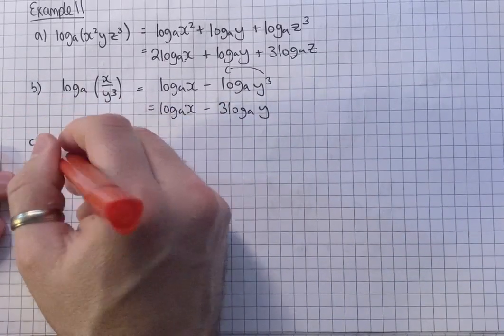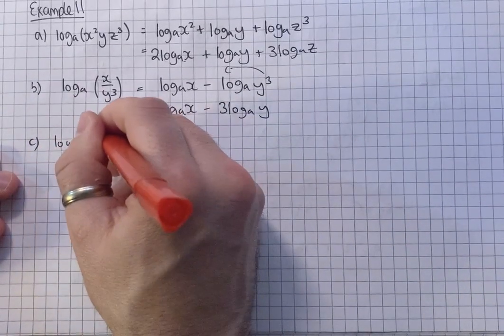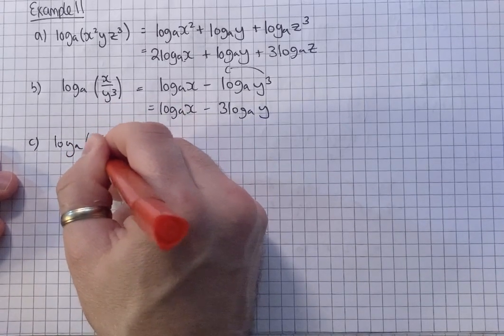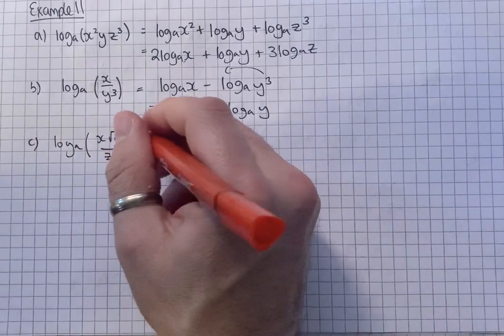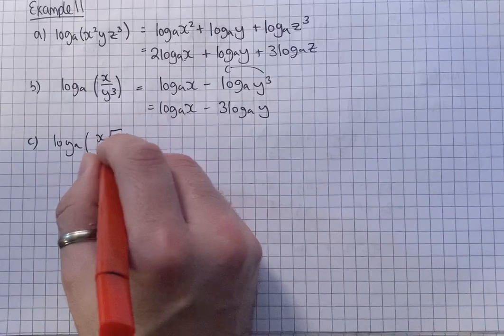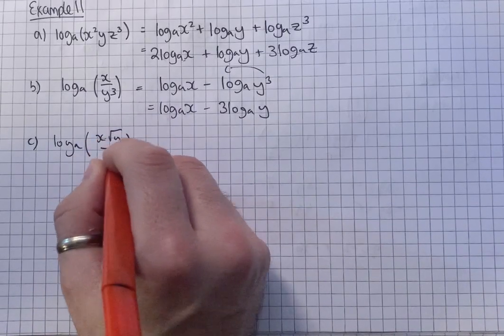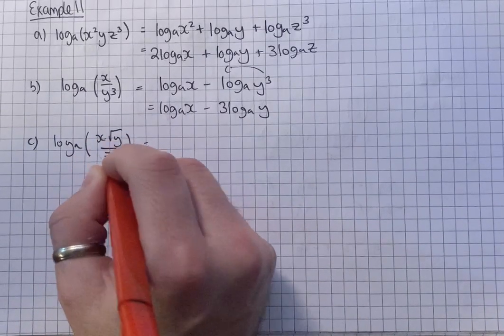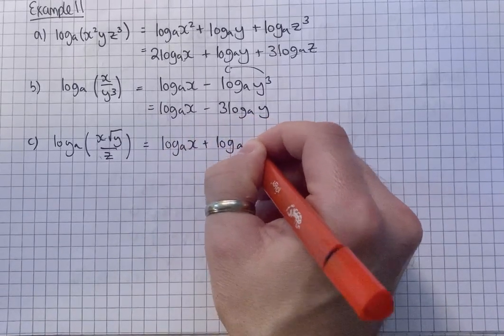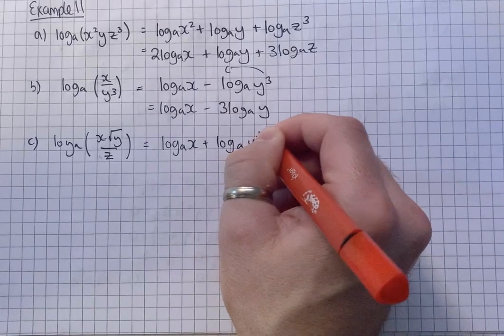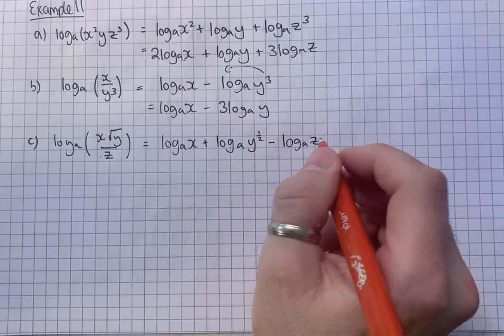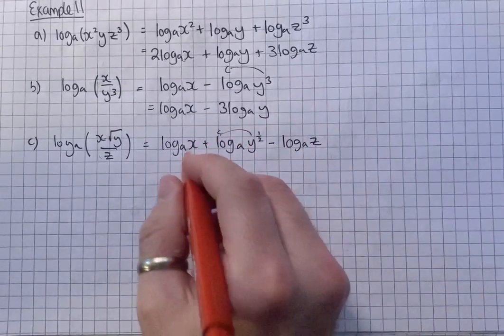Let's see C. Okay. Well, the first thing to notice on this one is square root. Remember square root is power half. So these two are multiply, so when we split we're going to add. Divide, so when we split we're going to subtract. Remember y to the half is square root. And because it's divide we subtract. So all we need to do now is bring that half to the front.